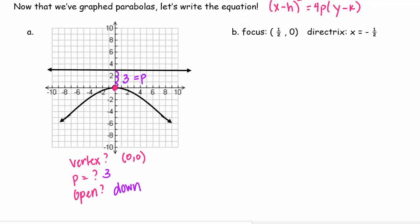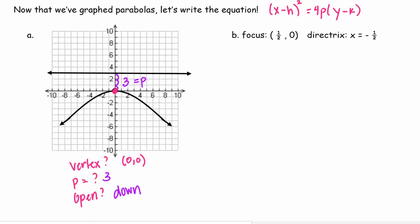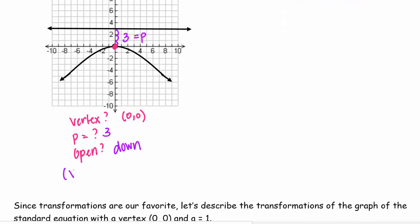So I'm going to use this information to plug into this formula so I can get my general equation. So this is going to be (x - 0)² = -4(3)(y - 0). That's p, 3 is p, and it's negative because it's opening down. So let's clean that up a bit. That's x² = -12y.